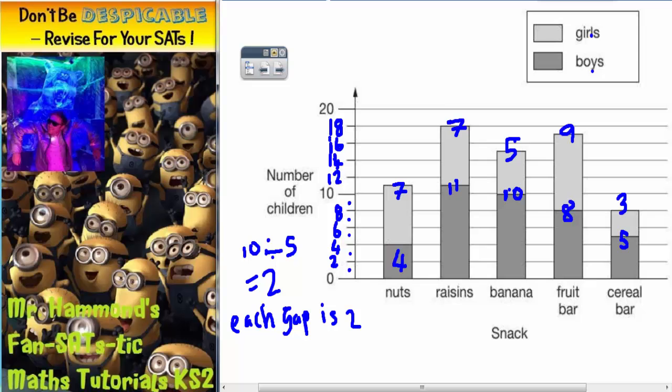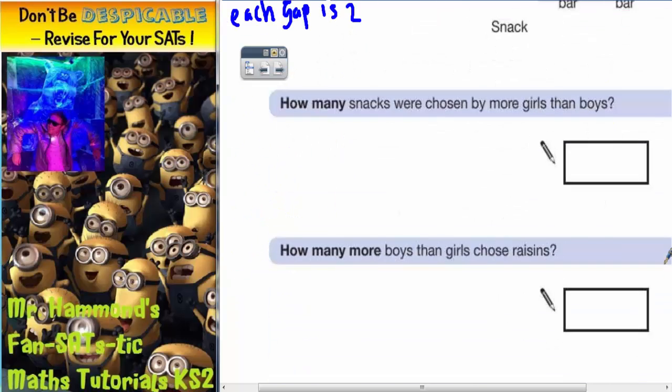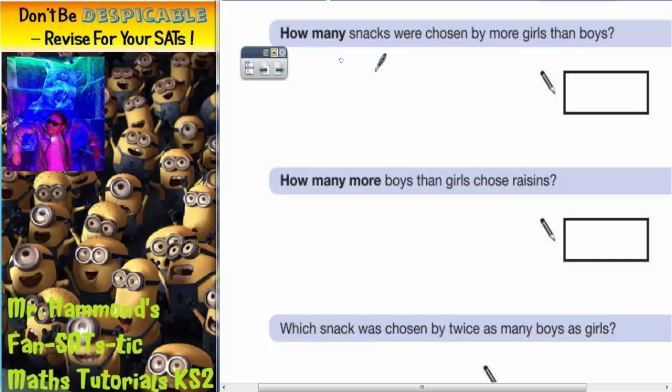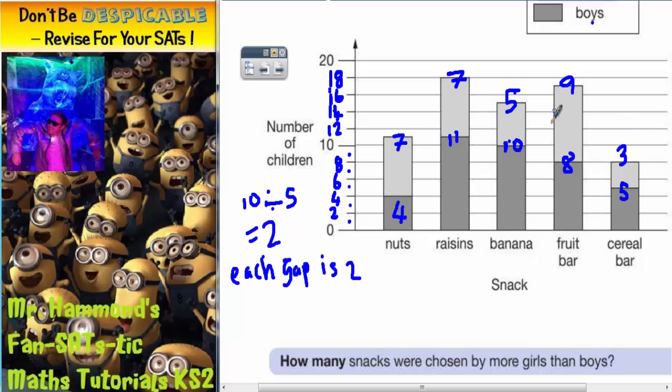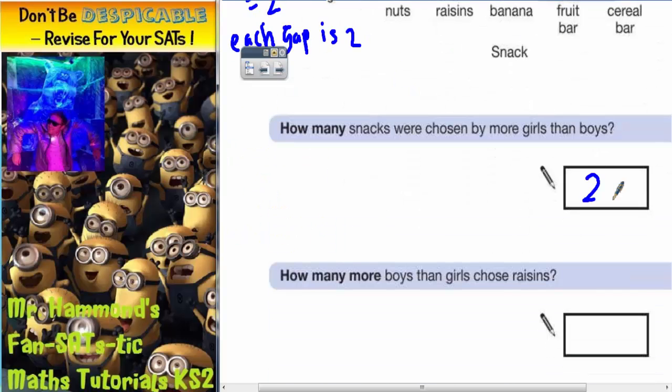Now we've got all the numbers, we should be able to answer the questions more easily. How many snacks were chosen by more girls than boys? Nuts had more girls. Raisins had more boys. Banana had more boys. Fruit bar had more girls. Cereal bar had more boys. So the only 2 where the girls bar is bigger than the boys bar is nuts and fruit bar. So the answer is 2.